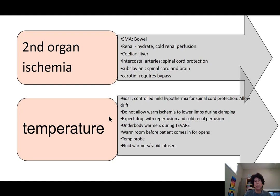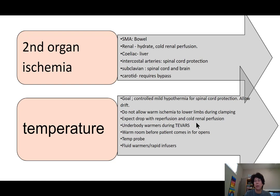Temperature management is our next big topic. Our goal for most of these cases is mild controlled hypothermia, which helps with spinal cord protection, so we allow some drift. We do not want warm ischemia to the lower limbs during clamping, so make sure you turn your under-body warmers and lower-body warmers off if you clamp the aorta. Expect a drop in temperature with reperfusion of the ischemic limbs, as well as with cold renal perfusion — when surgeons ask for cold renal perfusion, they hook up ice-cold renal lactate into the renal artery, which perfuses the kidney and returns to systemic circulation via the renal vein.